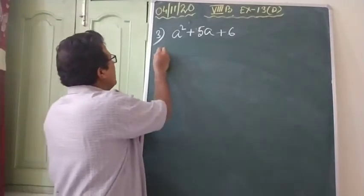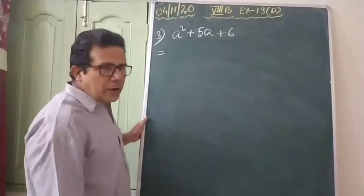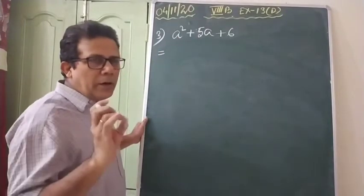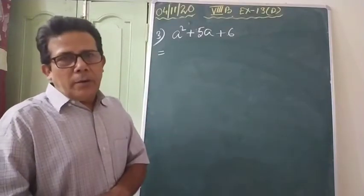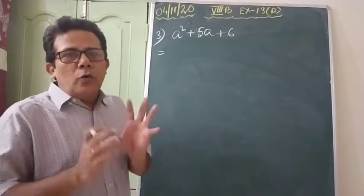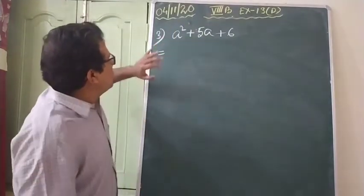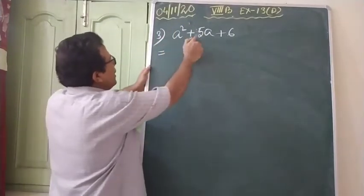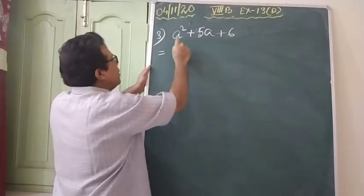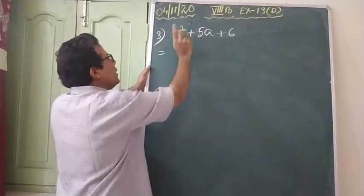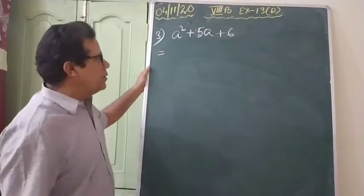See question number 3. Same way — 1, 2, 3 — three terms are there. That means the number of terms is odd. So you have to convert them into even number. How to convert them? You have to follow the same routine. First come to the question and see: you have a², you have a — one variable, which is a. The highest power is in the beginning, and at last the constant.